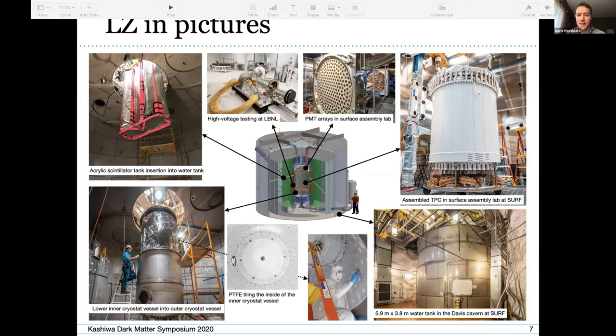PMT arrays as they sat in the surface assembly lab before being integrated into the TPC. You have the TPC on the right hand side of the slide. The bottom right shows the water tank which is sitting inside of the Davis Cavern at SURF, that's where everything goes to ultimately be integrated. Then on the left hand side you see the two cryostat vessels, the inner vessel being lowered into the outer vessel. On the inside of the inner vessel we have this PTFE paneling, which improves light collection efficiency in the skin region. You can also see the PTFE panels on the TPC in the top right picture. That's to reflect light internally inside the TPC to improve our energy thresholds.